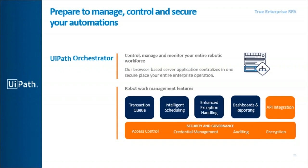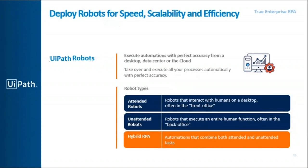UiPath Studio is the place where you design your workflows. For example, comparing two invoice documents, scraping data, and performing steps — you define the process for automation here. It has many activities easily integrated with platforms like Microsoft Azure, Google Cloud, and Excel. UiPath Orchestrator is essentially a server where all robots and processes built in UiPath Studio are stored. A workflow is built in Studio and then published to the Orchestrator server.